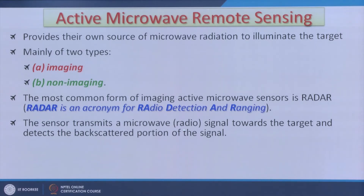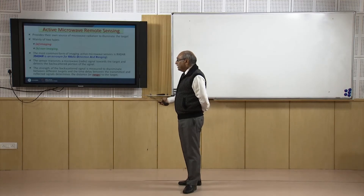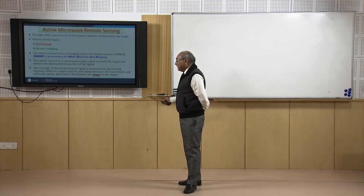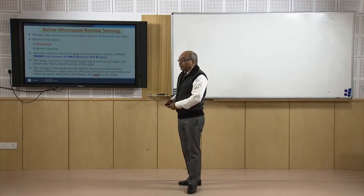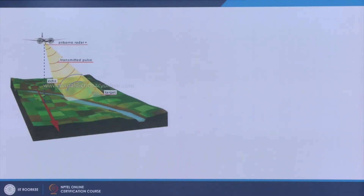The sensor transmits a microwave or radio signal towards the target — if on board a satellite, towards the earth — and detects the backscattered portion of the signal. The strength of that backscattered signal discriminates between different targets, and the time delay between the transmitted and reflected signals determines the distance or range to the target. Here an airborne radar system is shown: a pulse is sent towards the earth, the backscatter (also called echo) is recorded as the aircraft or satellite moves forward.